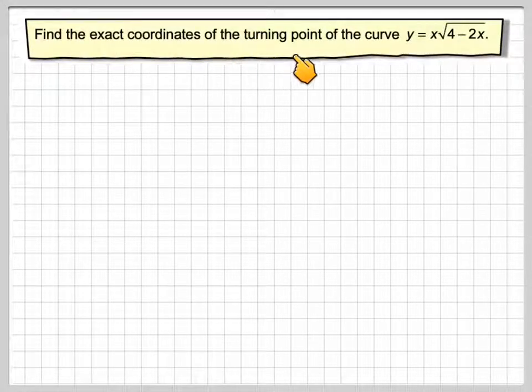Find the exact coordinates of the turning point of the curve y equals x times the square root of 4 minus 2x.